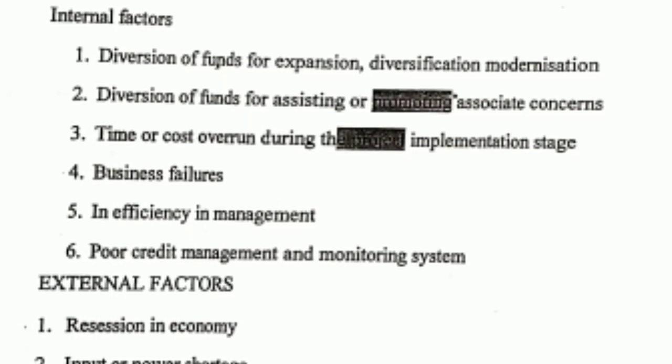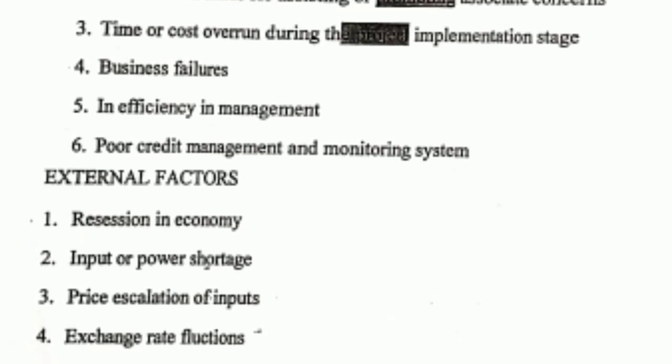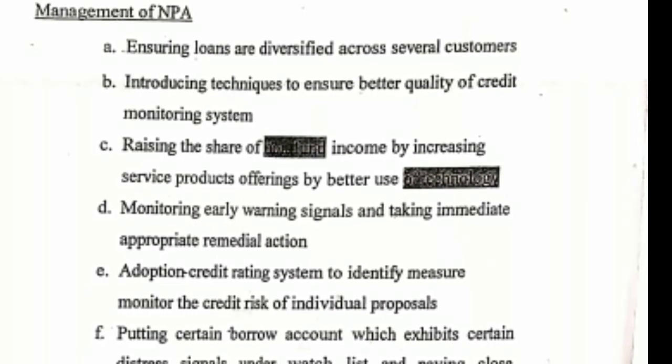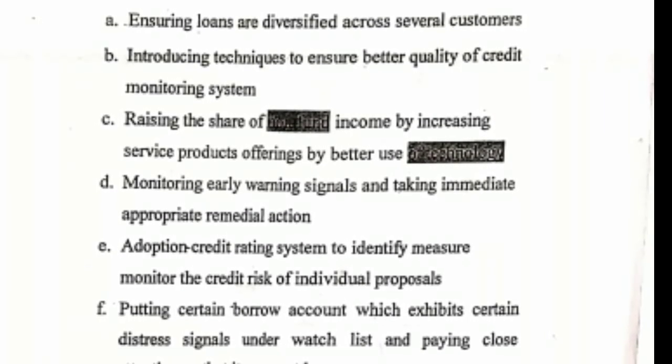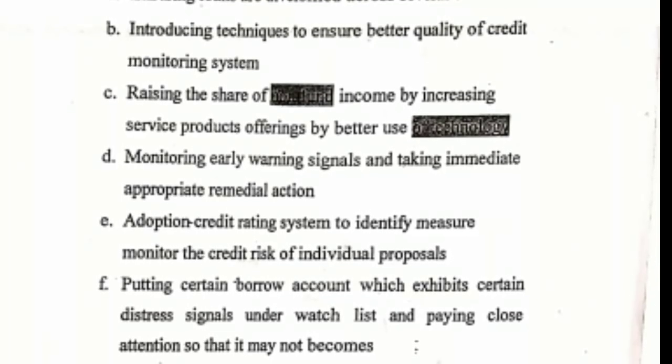Amount should be spread in different parts of society. Diversion of funds is also a similar issue. Time or cost overruns — there should be a particular duration mentioned beforehand. Business failures occur when proper guarantees have not been taken for that particular person. Inefficiency in management means people are not cooperating within the banking sector. Poor credit management means giving loans to persons who are not able to repay the amount — that is known as poor credit policy, and the policy should be clearly defined.